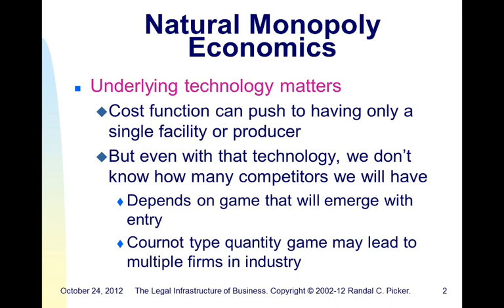The entrant stays out either because the incumbent has made clear they are committed to pushing prices down to marginal cost — though how you make that commitment is more complicated — or because they anticipate playing a price competition game, a Bertrand game, where the Nash equilibrium is at marginal cost, so you couldn't recover the fixed investment and therefore don't enter. That said, the Cournot version of that model looks different, and in that situation we might sustain multiple firms in the industry, meaning a natural monopoly cost function wouldn't necessarily mean only one firm.